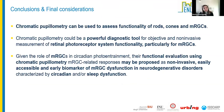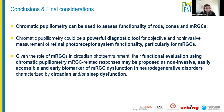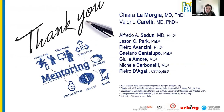In conclusion, chromatic pupillometry can be used to assess functionality of rods, cones, and melanopsin retinal ganglion cells. We believe it could be a powerful diagnostic tool for evaluating the retinal photoreceptor system, particularly for mRGCs, and may be proposed as a non-invasive, easily accessible, and early biomarker of mRGC dysfunction in neurodegenerative disorders like Alzheimer's disease, which is characterized by circadian and sleep dysfunction.